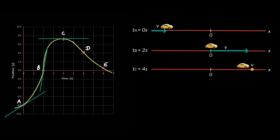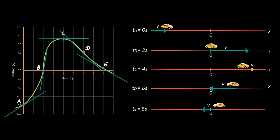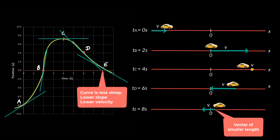At t = 6 seconds, the tangent to the curve at D tilts towards the left, and therefore it has a negative slope, which means the velocity is negative and the car is moving in the minus x direction. At t = 8 seconds, the tangent to point E also has a negative slope, meaning the instantaneous velocity is negative and the car is moving in the negative x direction. The value of slope here is small, so the instantaneous velocity must also be small, shown with a vector of smaller length.